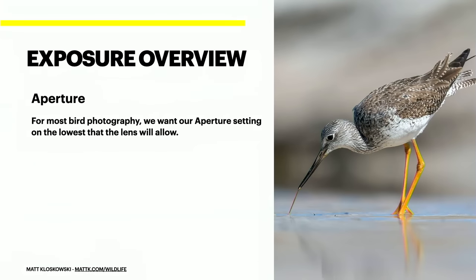For most bird photography, we want our aperture at the lowest f-stop setting that lens can go to — f4, 5.6, 6.3, f8, whatever your lens goes to. Zoom lenses usually start creeping up a little higher; prime lenses will let you get down a bit lower. Whatever it is, 99% of the time I'm never going to change this setting.